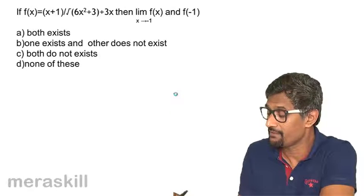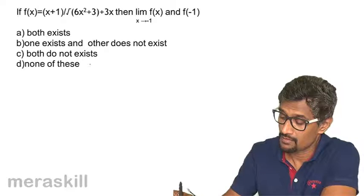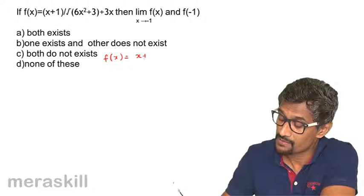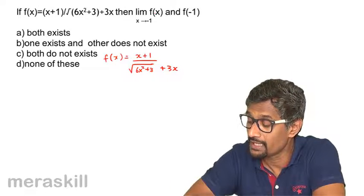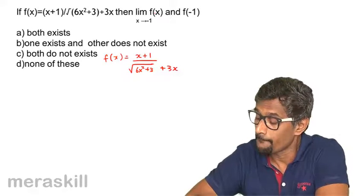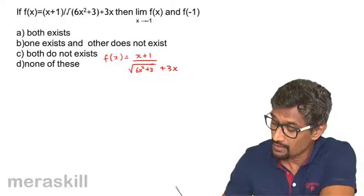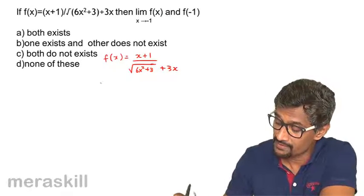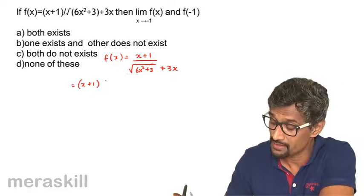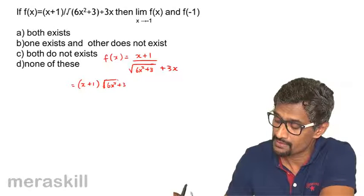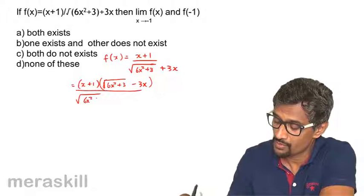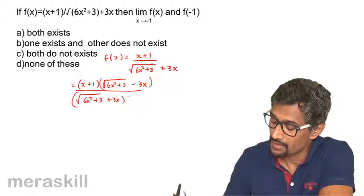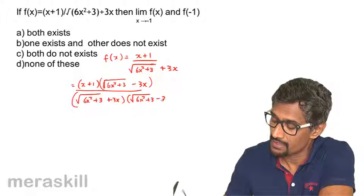Now we have a new question: f(x) equals (x plus 1) divided by the square root of (6x² plus 3) plus 3x. We need to determine whether the limit of f(x) as x approaches minus 1 and f(minus 1) exist or do not exist. If you rationalize the denominator, you multiply by root (6x² plus 3) minus 3x, and the denominator becomes root (6x² plus 3) plus 3x times root (6x² plus 3) minus 3x.